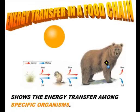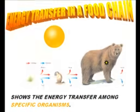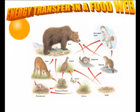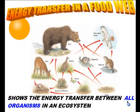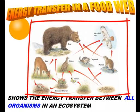A food web is a little more complex. What a food web shows, that's different from a food chain, is the energy transfer between all of the organisms in an ecosystem. It's showing not just two or three animals — it's showing every animal and plant in the ecosystem. So let's learn how to read a food web.